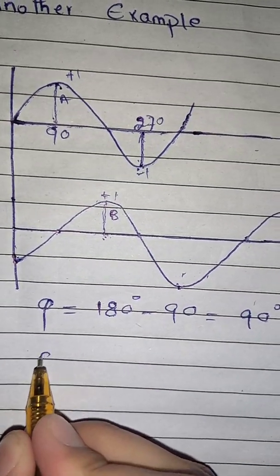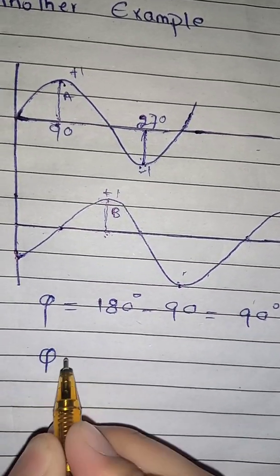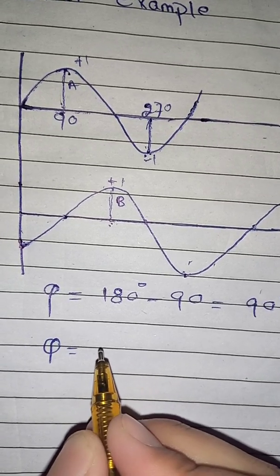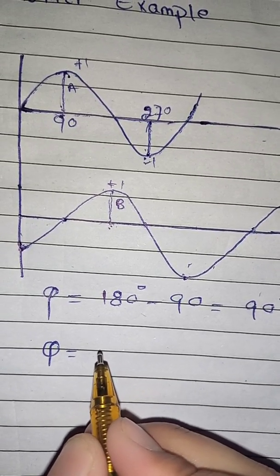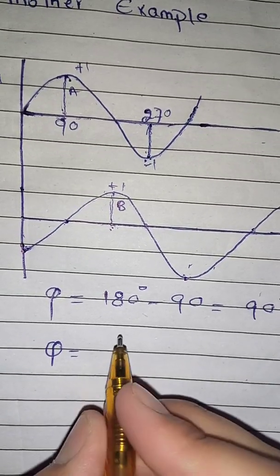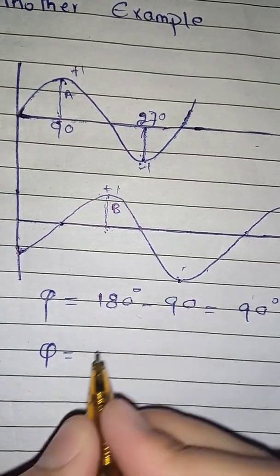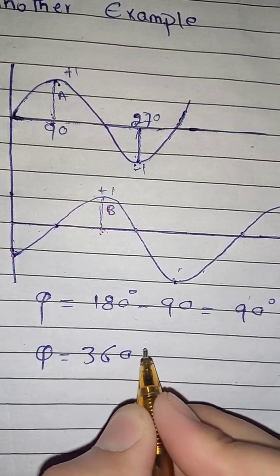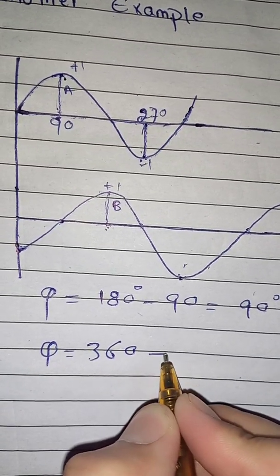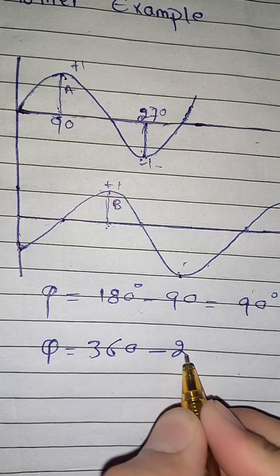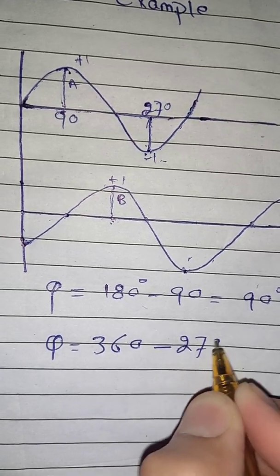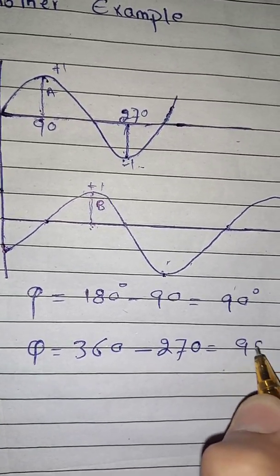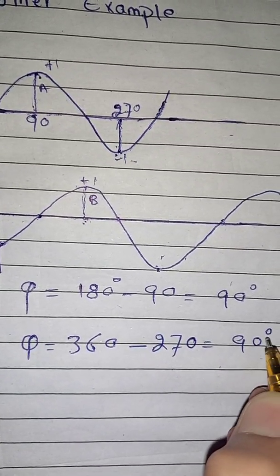You can also find the phase difference by another method by considering the same value points: 360° minus 270° gives us the same answer of 90 degrees. Thank you.